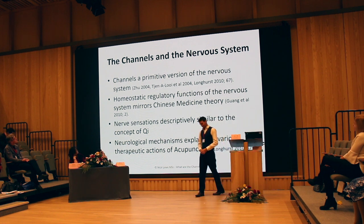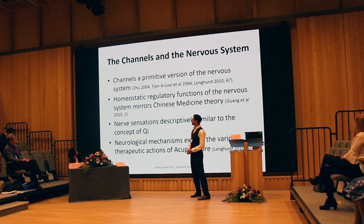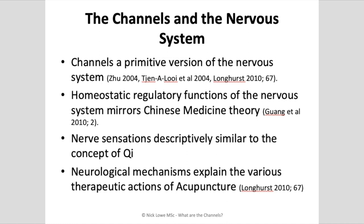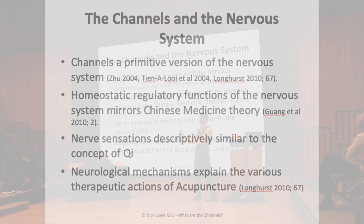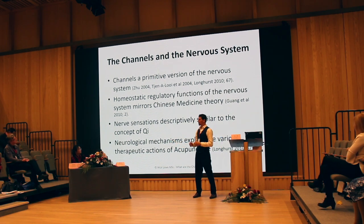Unfortunately, it gets more complicated because there are other systems and pathways involved. Many researchers have suggested that the channel system was a kind of primitive attempt to describe the nervous system as we know it today. This wouldn't have been as easy to tangibly see and feel as the blood vessels. The homeostatic regulatory functions of the nervous system could arguably more closely reflect the holistic view of the channels in Chinese medicine as a whole-body regulatory system, able to regulate processes between the different organs, tissues, and glands. We can also see descriptive similarities in the nervous sensations we get when we stimulate a nerve with descriptions of qi flow in the body.